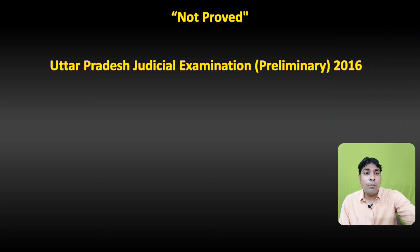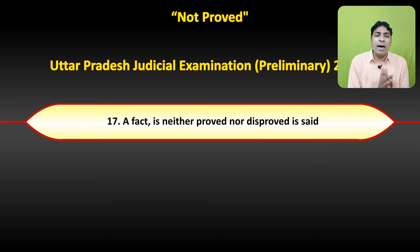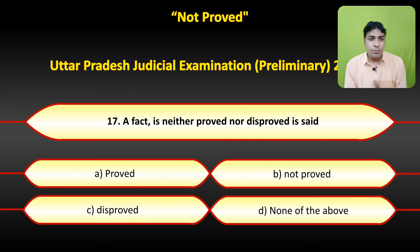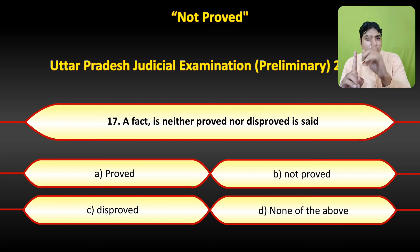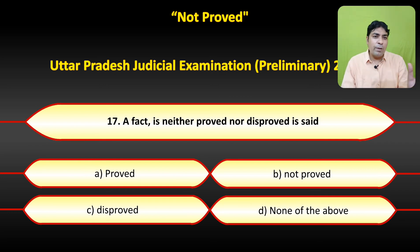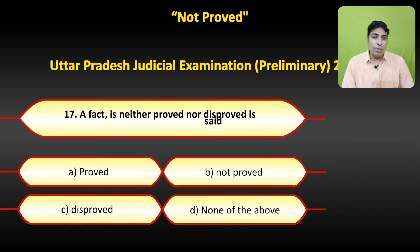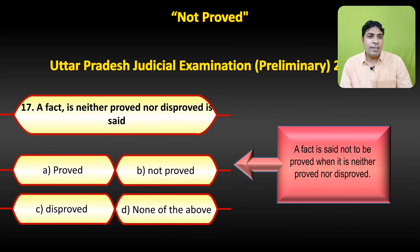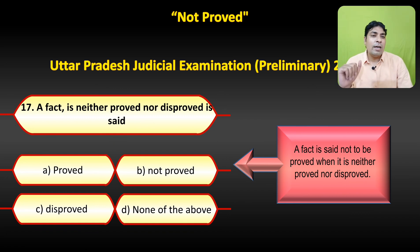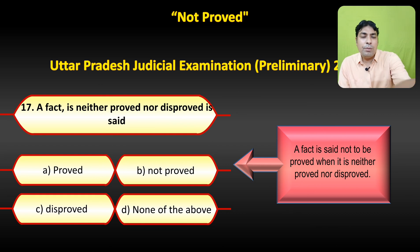Not proved pe question poocha gaya — Uttar Pradesh judicial examination prelim 2016 ke paper mein question number 17: 'Fact is neither proved nor disproved is said' — jo fact neither proved nor disproved hai, aisa fact ko hum kya kahenge? Proved? Nahi — proved tab hoga jab fact prove hua. Disprove tab hoga jab fact prove nahi hua. Aur agar fact prove bhi nahi hota, disprove bhi nahi hota, to wo fact kahlayega not proved. So option B is the correct answer, as per provision of Indian Evidence Act.